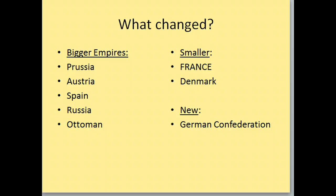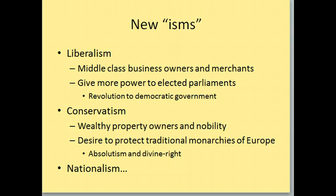During this time period, we also get some new isms, and you read about this in the chapter. Liberalism is going to be supported by middle-class business owners and merchants. It's desiring to give more power to elected parliaments — they want a revolution to change to a democratic form of government where everybody votes, rather than the monarchies they have in Europe. The conservative group opposes the liberals; it's supported by wealthy property owners, nobility, monarchs, and aristocrats. They desire to protect the traditional absolute monarchies of Europe and the idea of divine right — that God has given them power and therefore they should be king.